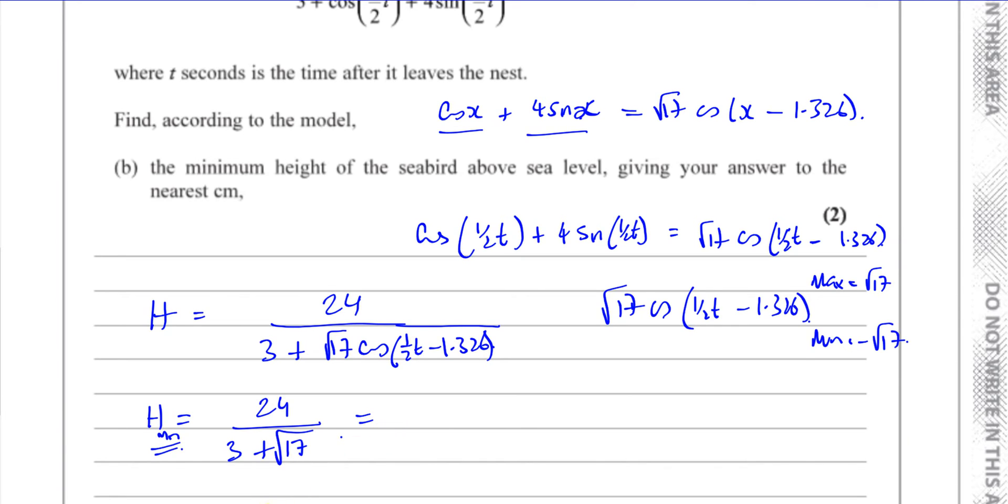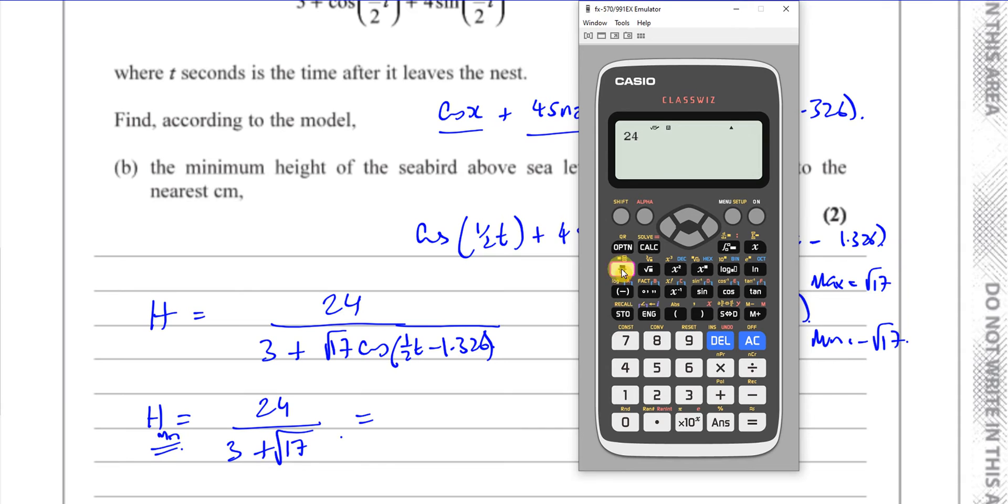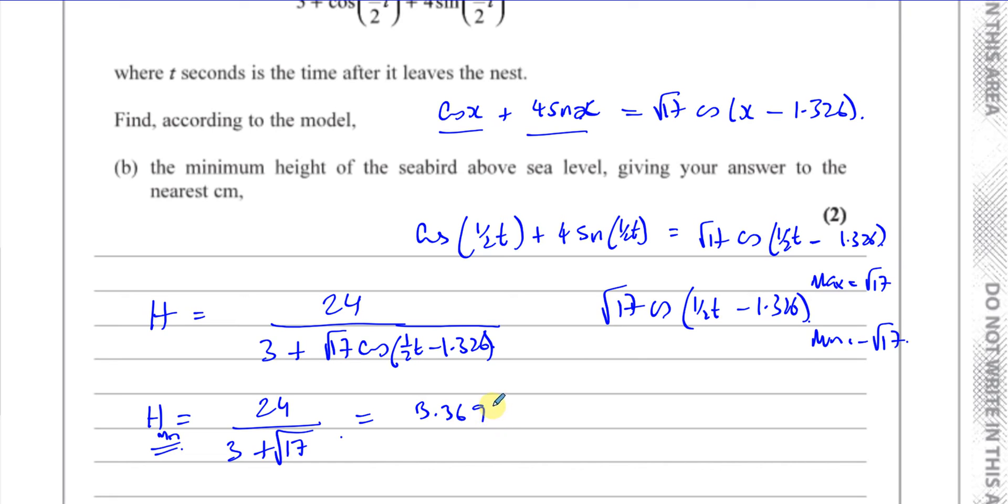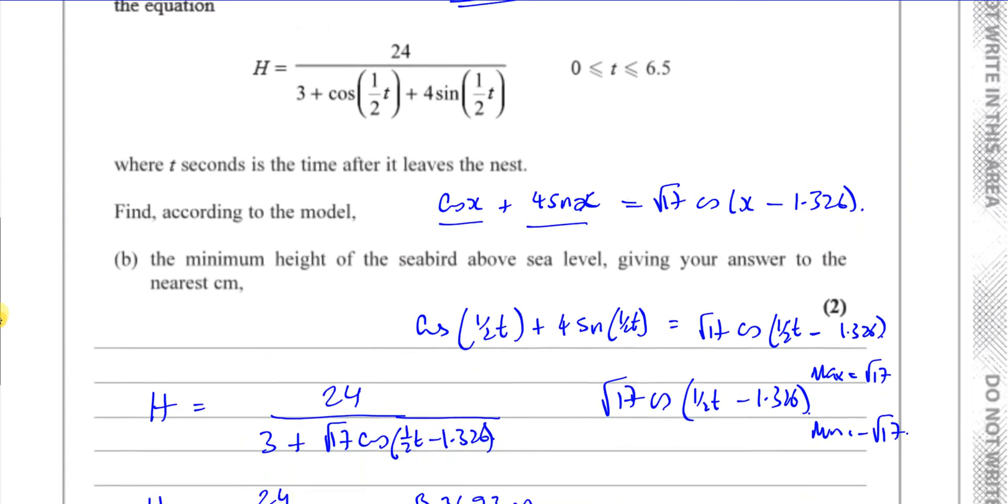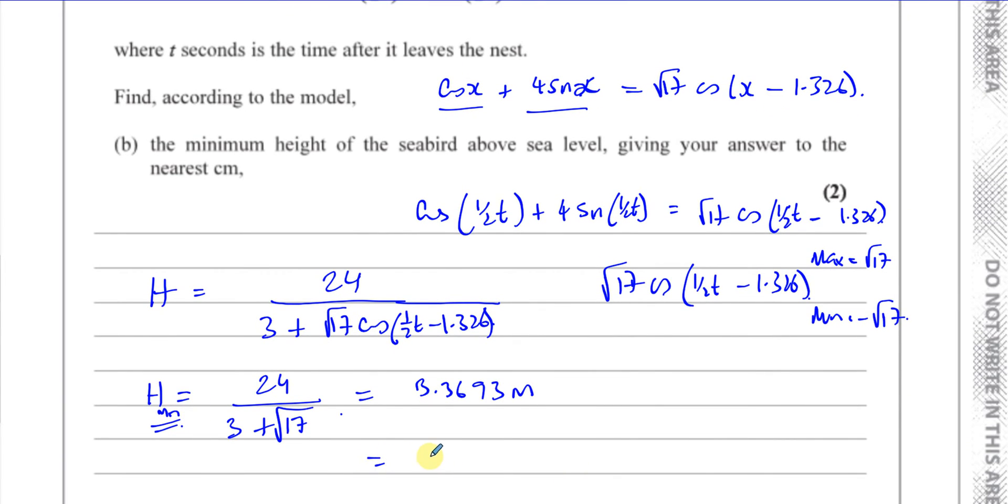So 24 divided by 3 plus root 17, that gives me 3.3693 meters. Now this is in meters, and we have to give it to the nearest centimeter, which means to two decimal places. So this is going to be 3.37 meters, correct to two decimal places, which is to the nearest centimeter. If you wanted to write it in centimeters, you could write it as 337 centimeters. So there's the answer for part B.